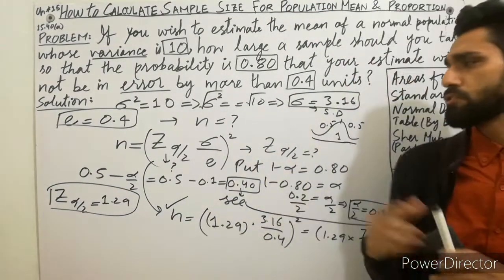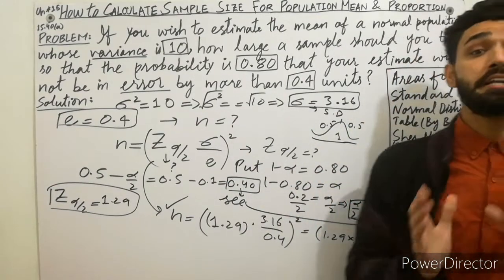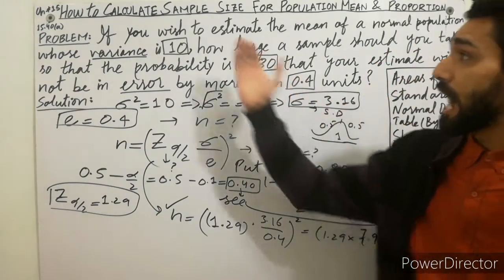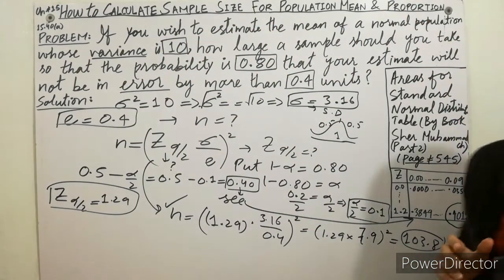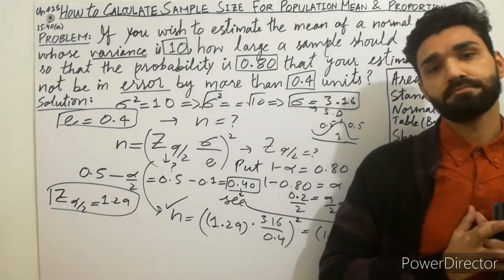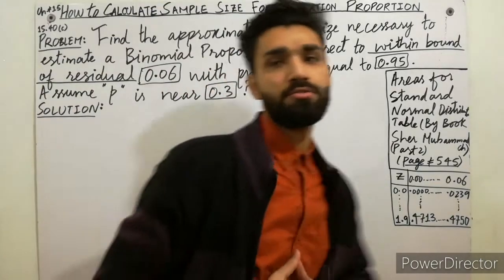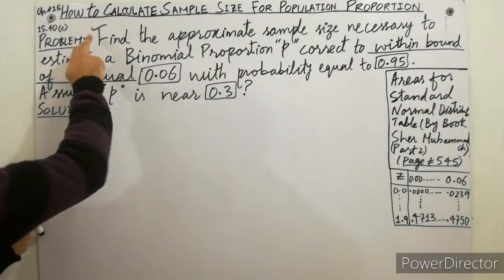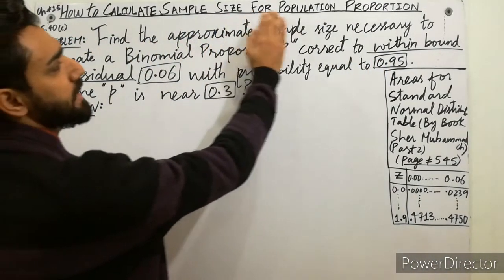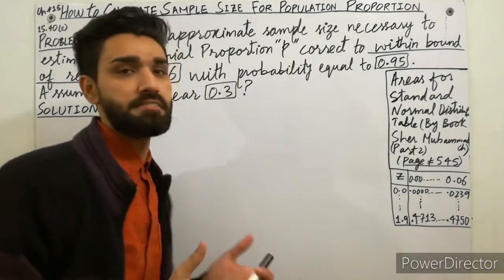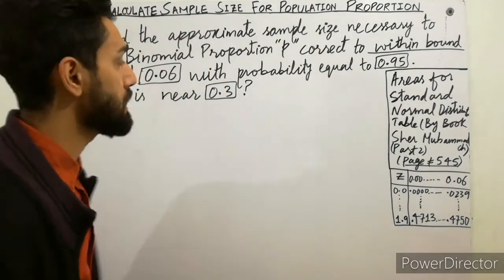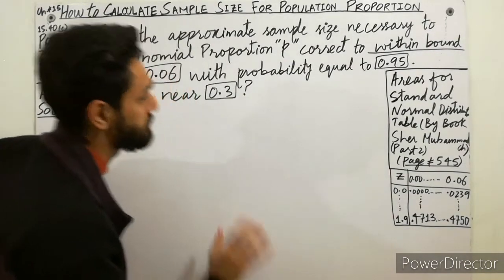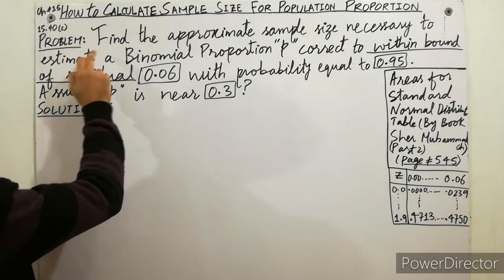But that is not the ending. Now the second step is starting. In the second step, I will calculate the sample size for population proportion. Don't skip that step. Hello friends, welcome back. I am here to explain how to calculate sample size for population proportion, which is the second part of the lecture. In this part, the problem is totally changed and the method is totally changed.